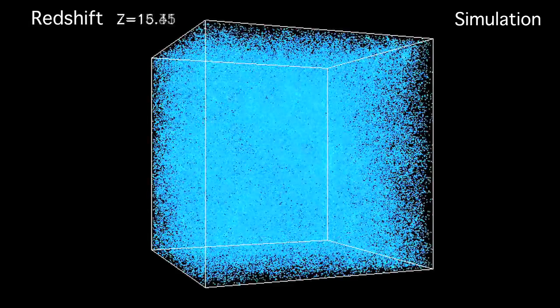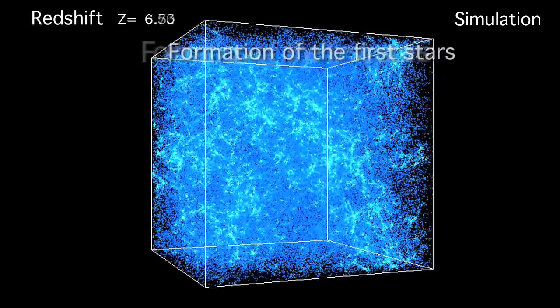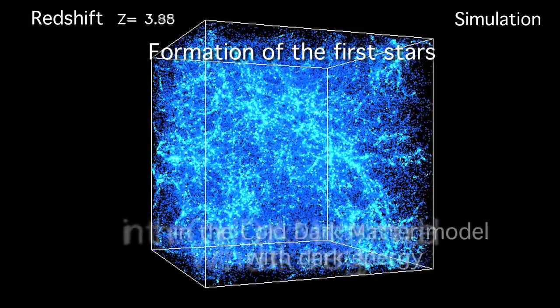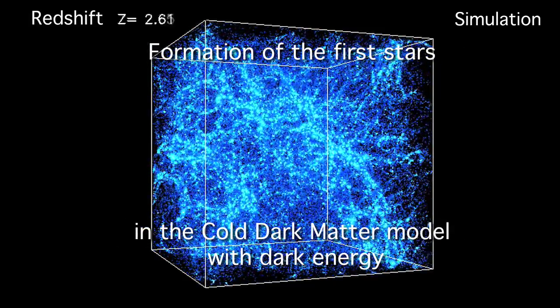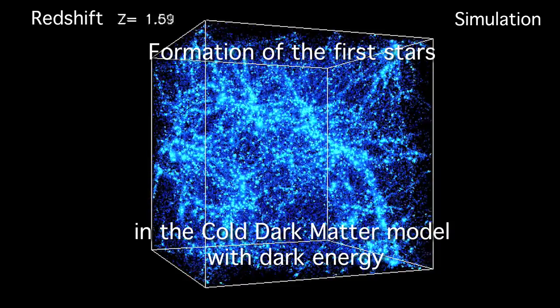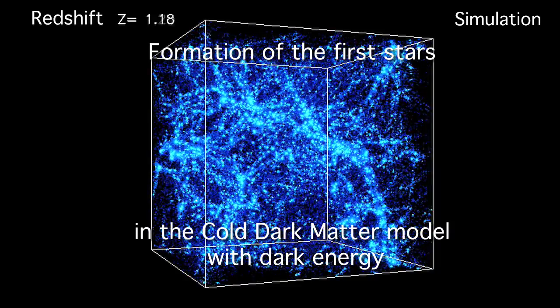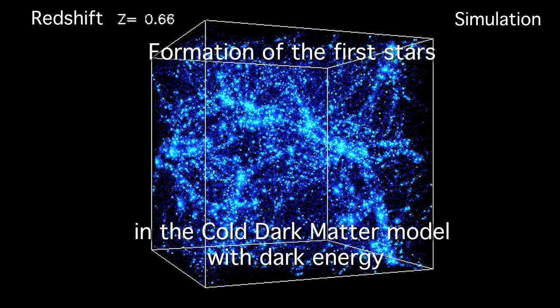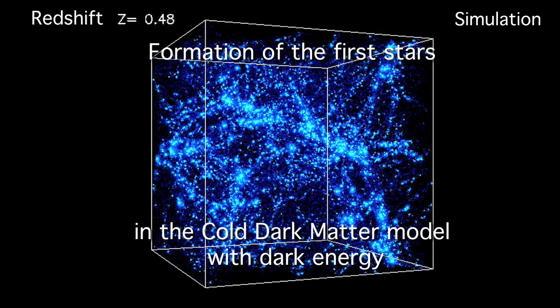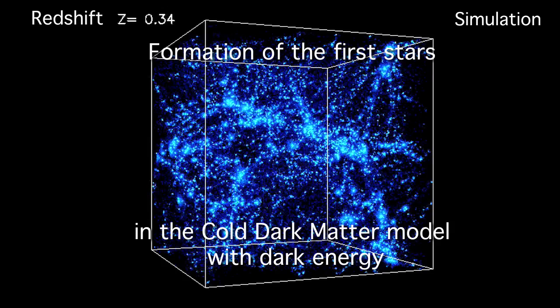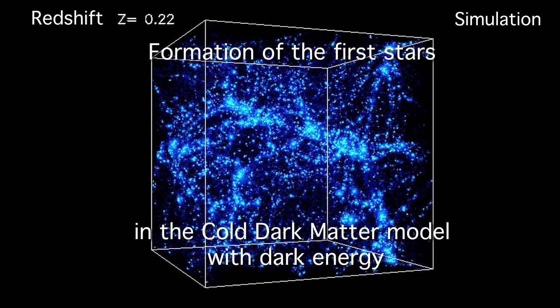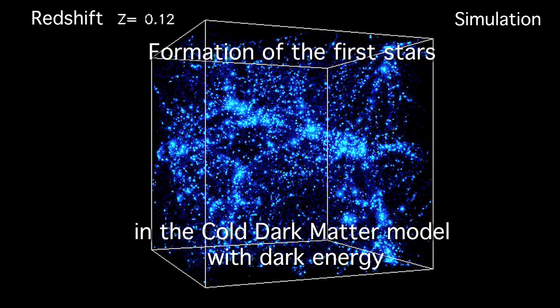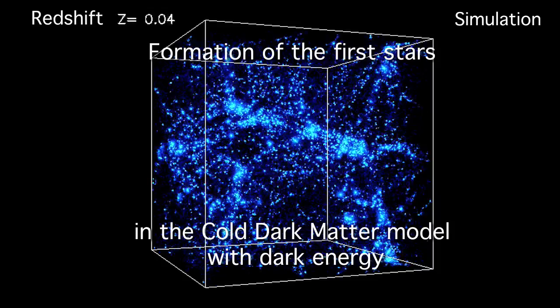The James Webb Space Telescope will detect the redshifted light from the very first stars that formed. When these formed, they ended the cosmic dark ages. This period followed the emission of the first light after the Big Bang, which is now detected as the cosmic microwave background. Little is known about the nature of these first stars or exactly when they were formed.